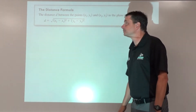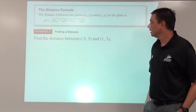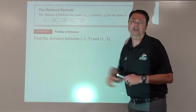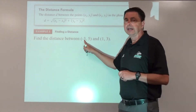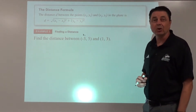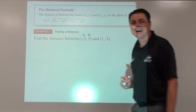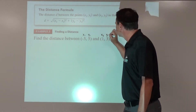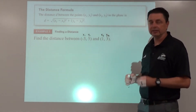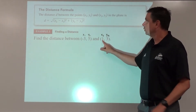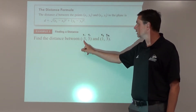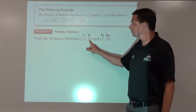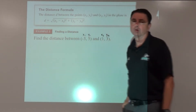Here's the distance formula. Find the distance between these two points. It can be helpful to label the points when putting them into the formula. We could say this is our first x coordinate, x sub 1, first y coordinate, y sub 1, second x coordinate x sub 2, and second y coordinate y sub 2. When we put it into the distance formula, we would calculate 1 minus negative 3 in parentheses squared plus 3 minus 5 in parentheses squared, all under the square root.